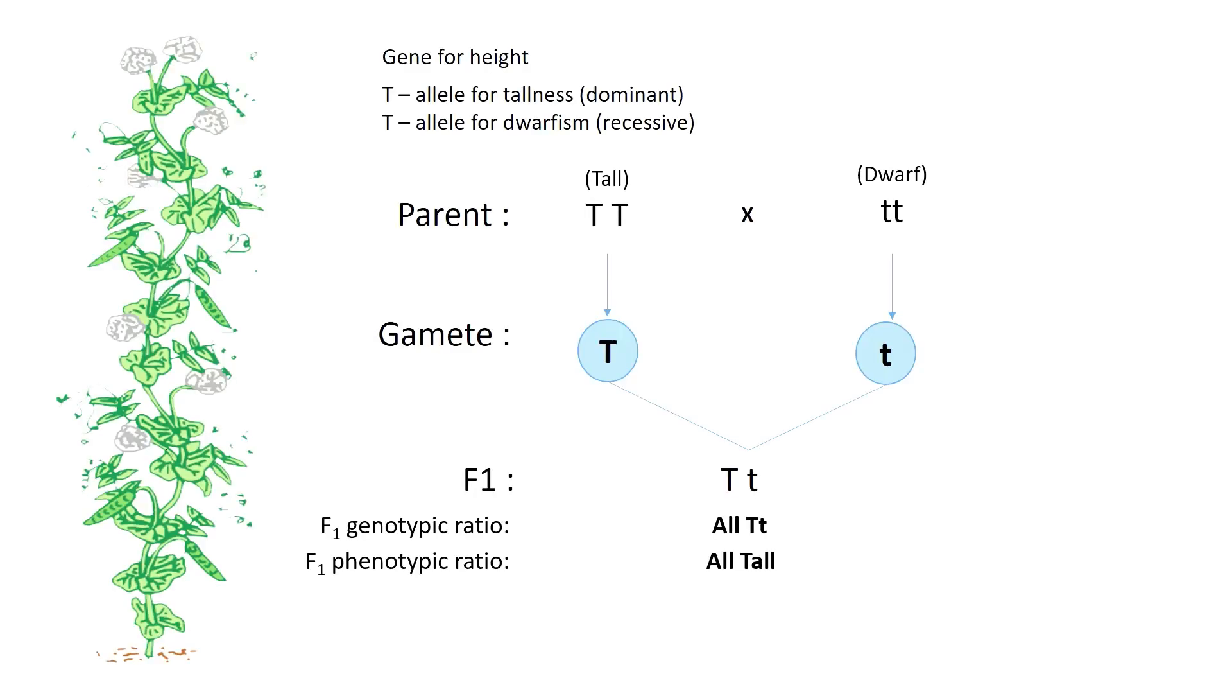From the previous cross between a purebred tall pea plant and dwarf pea plant, we found that all F1 offspring have the genotype capital T small t, or heterozygous, and tall phenotype.